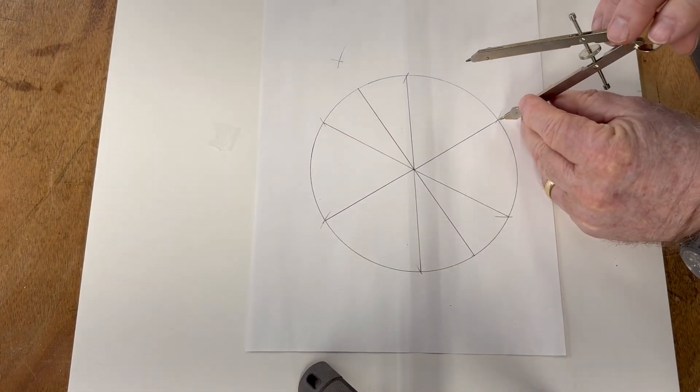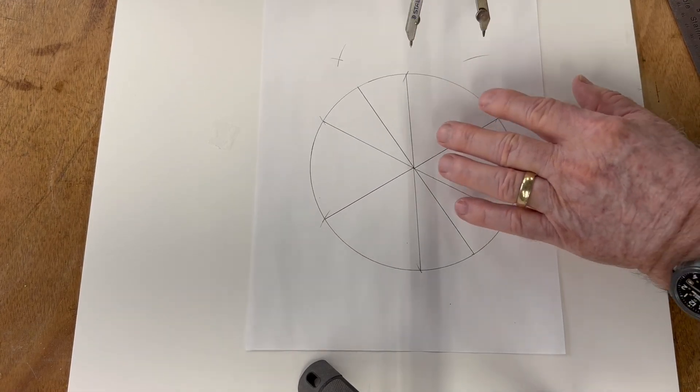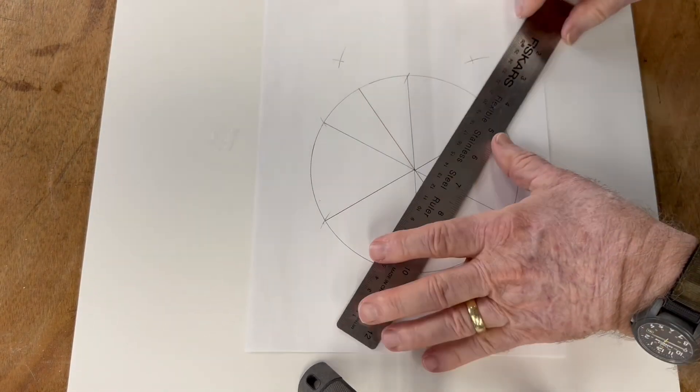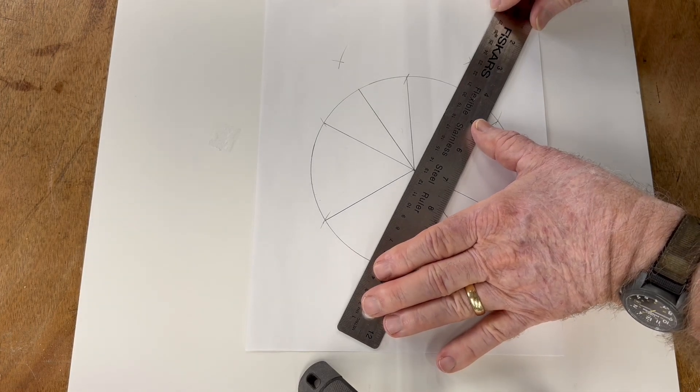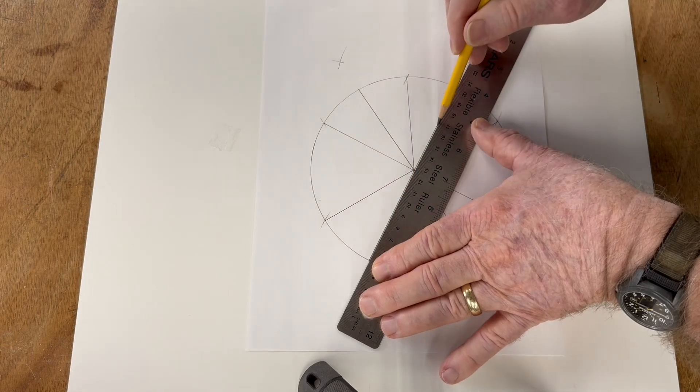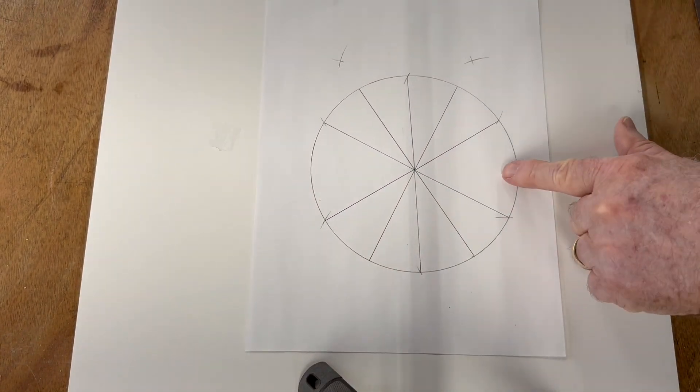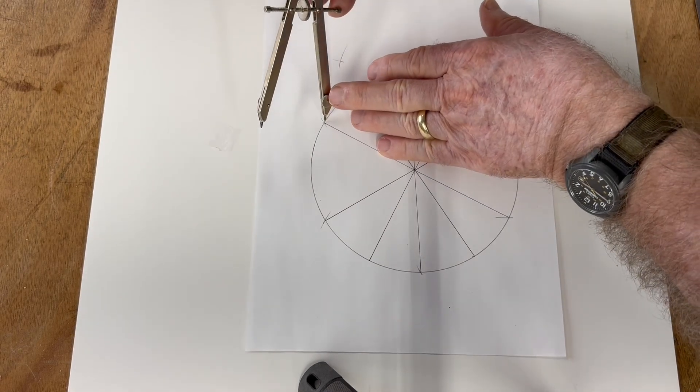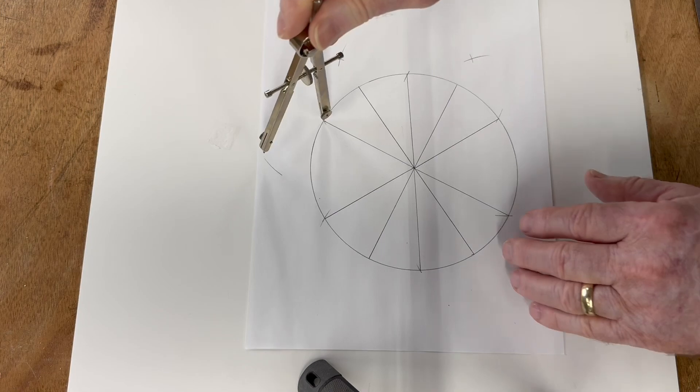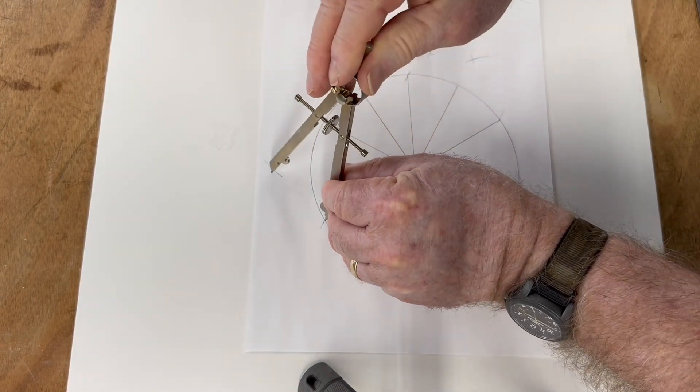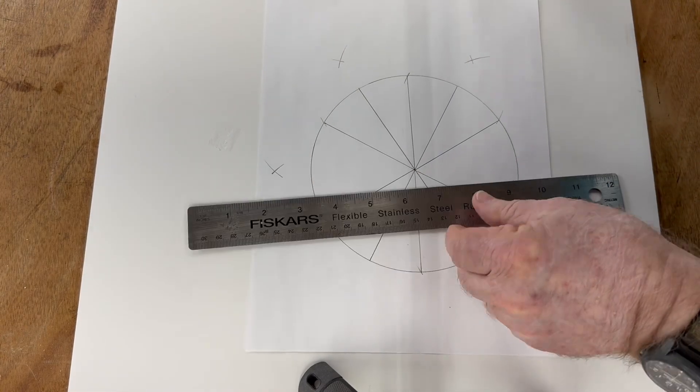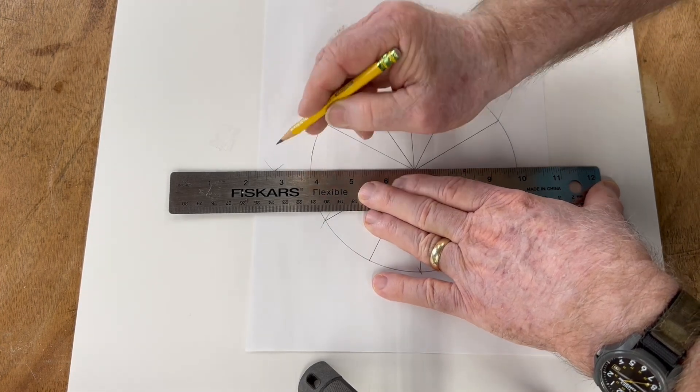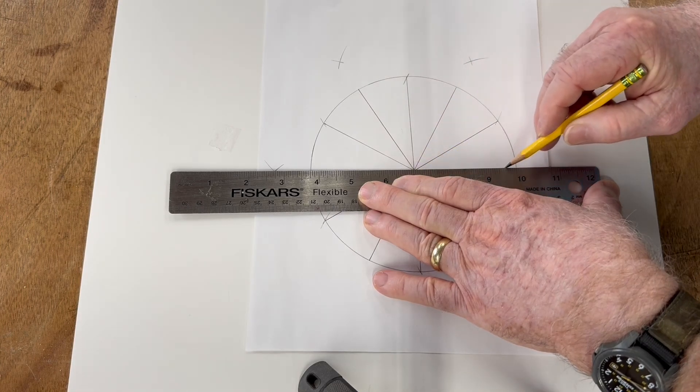Now I can take the pencil and draw this straight through. I'll do the same thing over here. I'll create an arc out here. Same thing right there. We'll do the last one right here and right there.